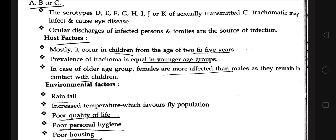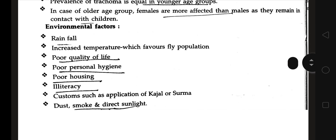Regarding host factors, trachoma mostly occurs in children from the age of 2 to 5 years. Prevalence is equal across younger age groups. In older age groups, females are more affected than males, as they remain in close contact with children and may get the infection from them.